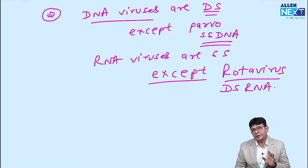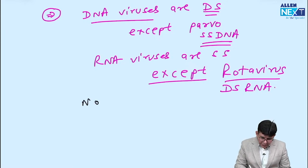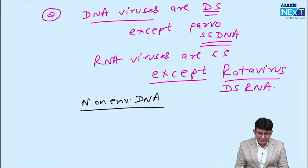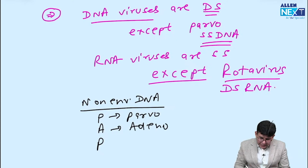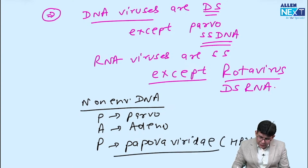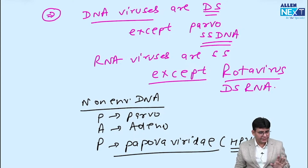Now talking about non-enveloped DNA viruses — remember them by the mnemonic PAP: Parvo, Adeno, and Papova. Papova is the Papovaviridae family, which includes Human Papilloma Virus, Polyoma, BK, and JC virus. All of them are non-enveloped.